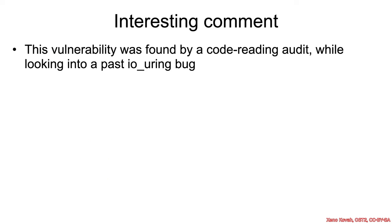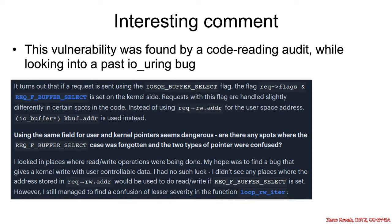I'd also point out an interesting comment found in the write-up for this. The vulnerability was found by a code-reading audit looking into a past io_uring bug. She was looking specifically to see how the previous one worked and then look for anything new. The relevant portion emphasized in bold in the original is this: using the same field for user and kernel pointers seems dangerous. Are there any spots where the rec_f_buffer_select case was forgotten, and the two types of pointer were confused?